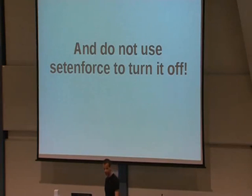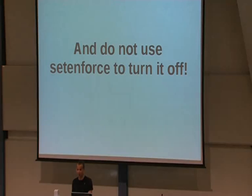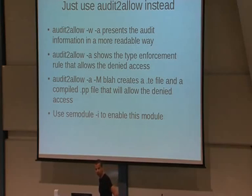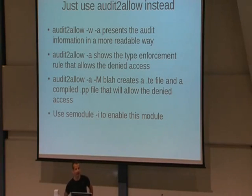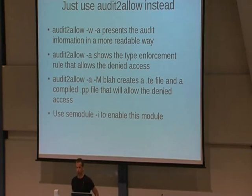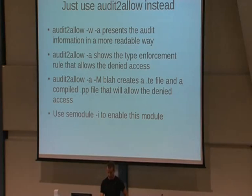What `audit2allow` does is interesting especially from a security perspective: it reads the denial messages and turns them into policies that will allow the previously denied activity. That makes your system work with your SELinux policy, but be careful — SELinux is trying to secure your system and you might open it too much by using `audit2allow` without understanding what you're doing. Do not use `setenforce` to turn it off — `audit2allow` is the better approach.